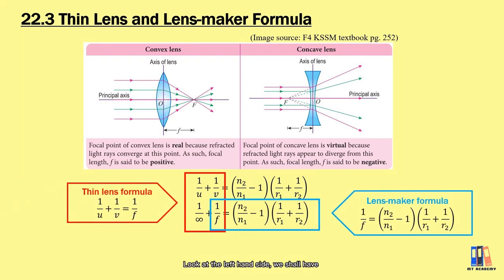Look at the left hand side. We shall have 1 over u plus 1 over v equal to 1 over f as the thin lens formula. So these are the two formulas that can be used when dealing with questions about lenses. The sign convention for this formula will follow the second type as I mentioned in the beginning.